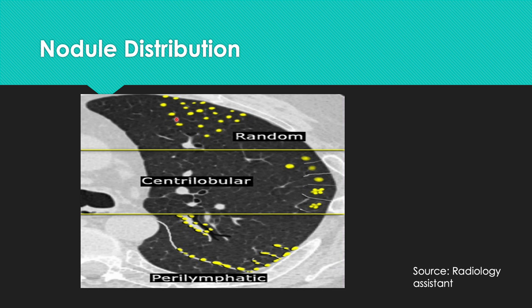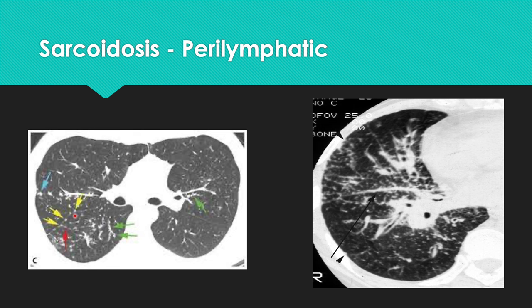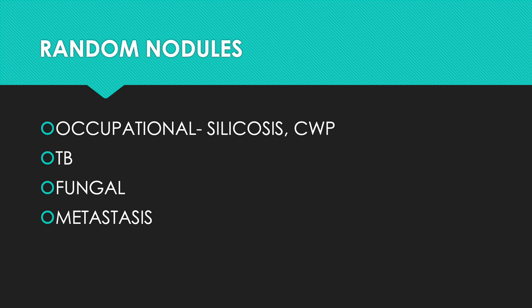Nodules may also be randomly located in the lung — called random nodules. Random nodules are commonly described in occupational lung diseases such as silicosis, coal workers' pneumoconiosis, tuberculosis, fungal diseases, and metastatic nodules. Silicosis nodules are upper-lobe predominant, the pleura is usually spared, and the dominant pattern is random — not specifically around bronchovascular or lymphatic bundles.